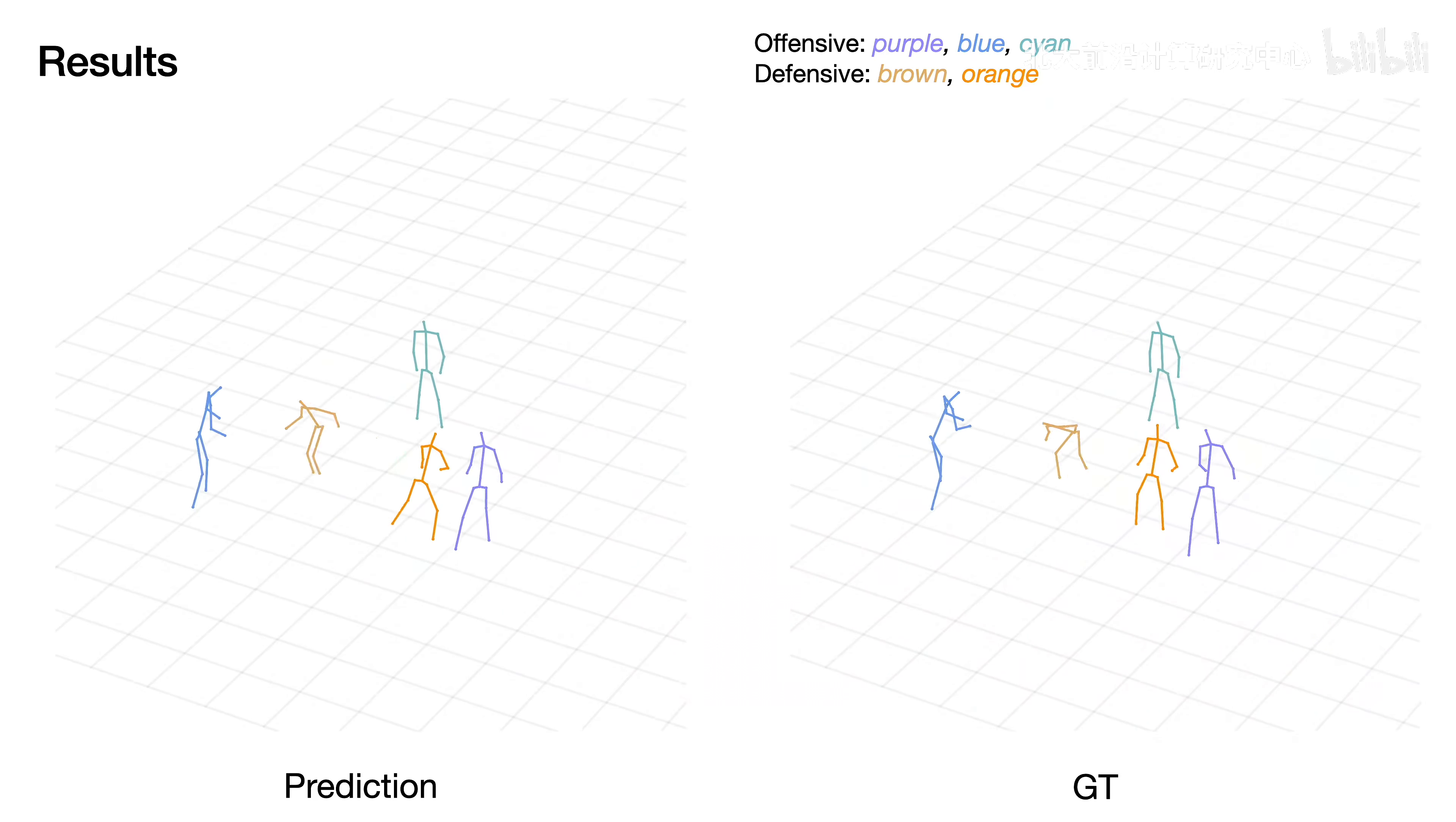In this case, Player Brown in the left video approaches Player Blue to defend. On the right, however, Player Brown successfully steals the ball halfway.